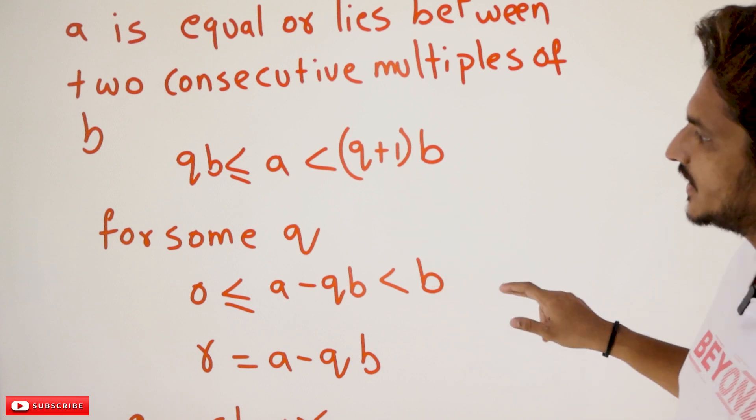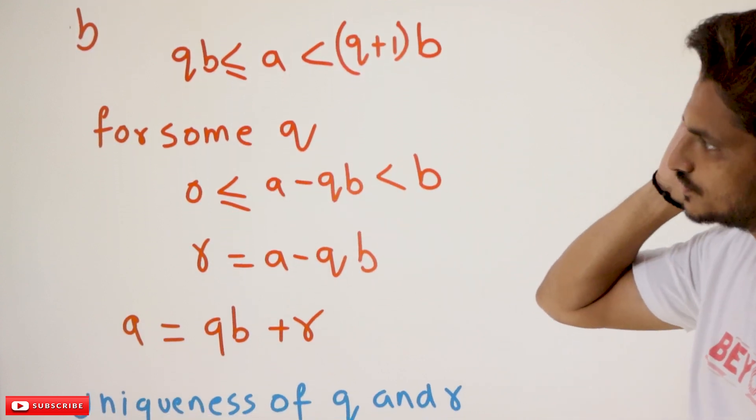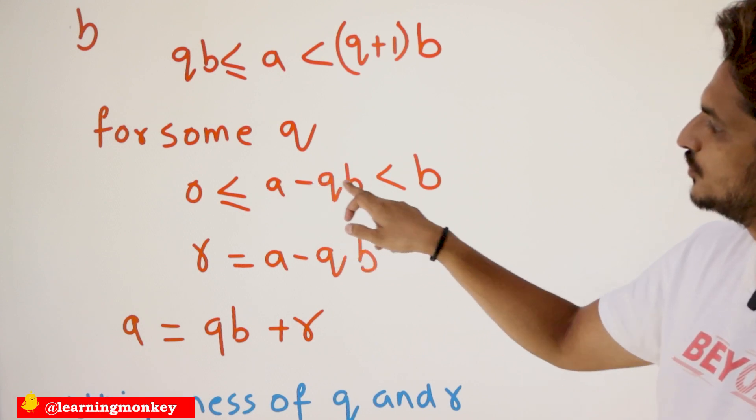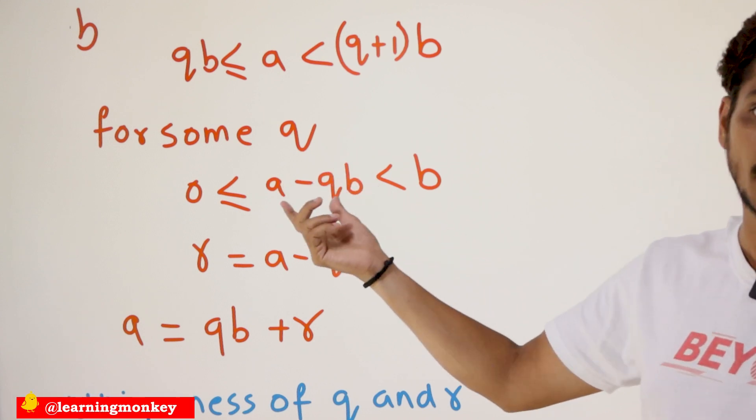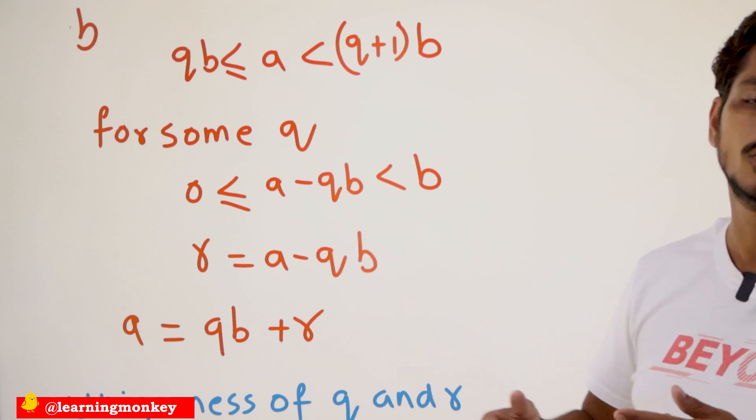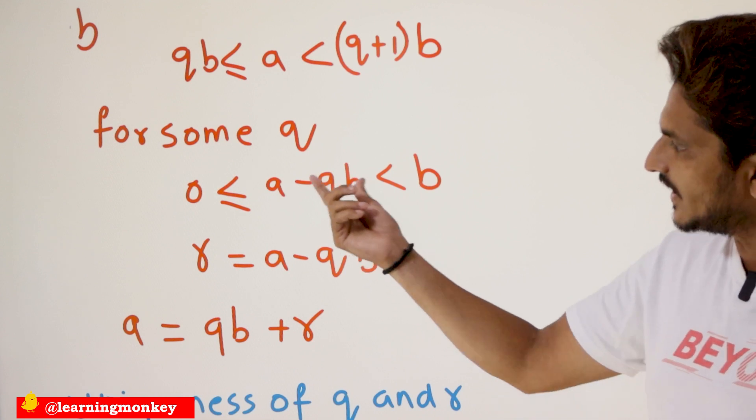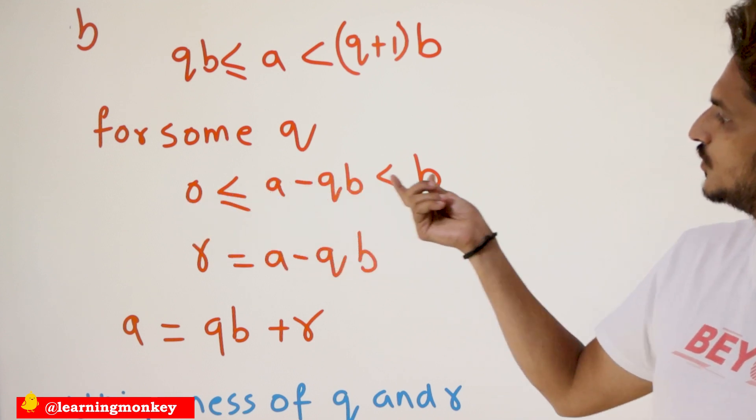So from this, we can write it as for some Q, this happens. Then we can write it as A minus QB, which means the remainder value. A equals QB plus R. Definitely, it lies between 0 to B.